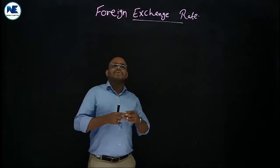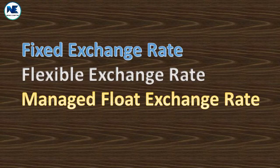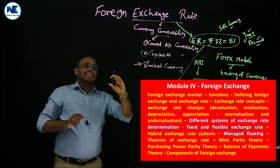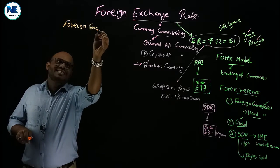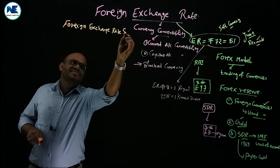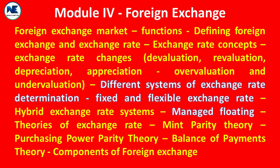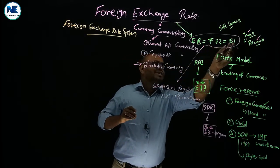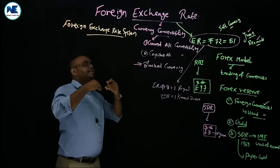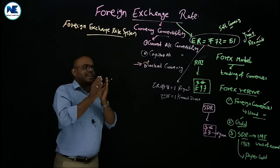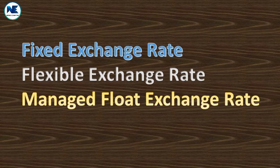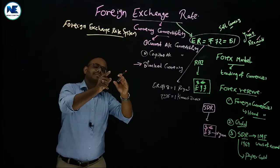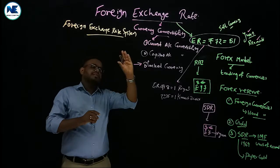Our topic is the foreign exchange rate system. What do you mean by the term foreign exchange rate system? That is a very interesting topic. The foreign exchange rate — for example, rupees 72 is equal to one dollar. So what system will decide this exchange rate? The foreign exchange rate is the rate at which you can convert your currency into another currency, and that process is known as currency convertibility.